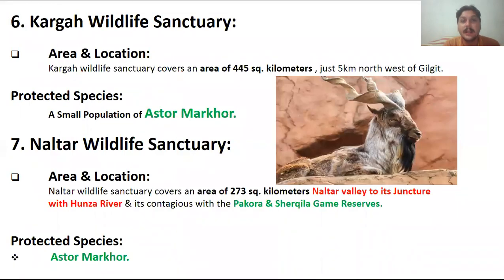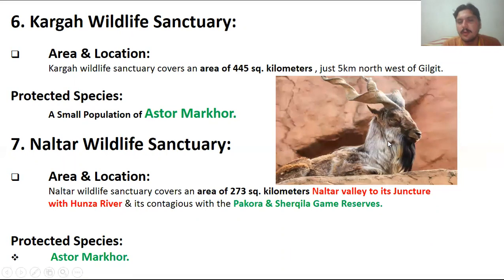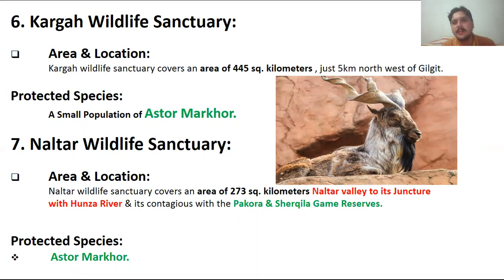Today I am going to explain the Karga wildlife sanctuary. In this video you can see the Astor Markkhor, which has a horn that twists like the body of a snake, with very long hairs in the neck region and a huge fur on its body. The Karga wildlife sanctuary covers an area of 45 square kilometers, located just five kilometers northwest of Gilgit. The protected species here is the Astor wild Markkhor.